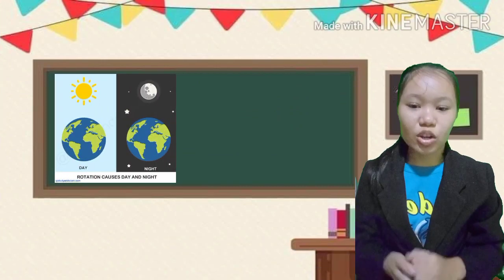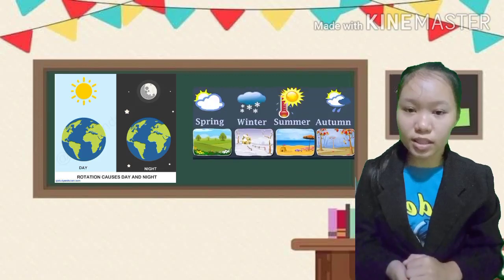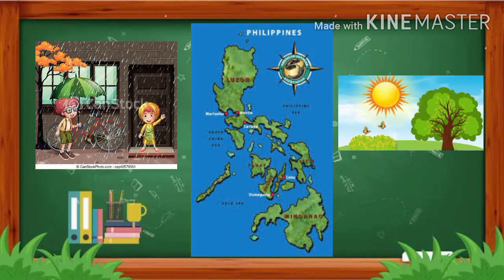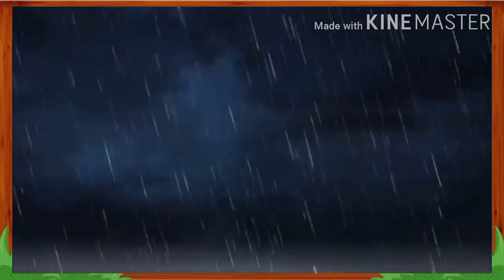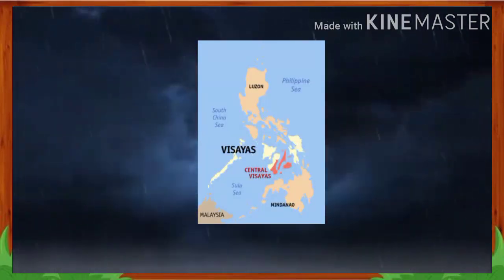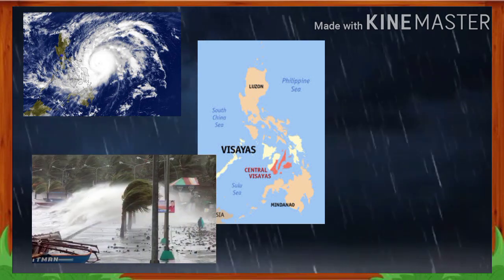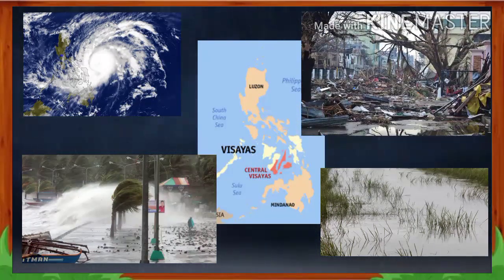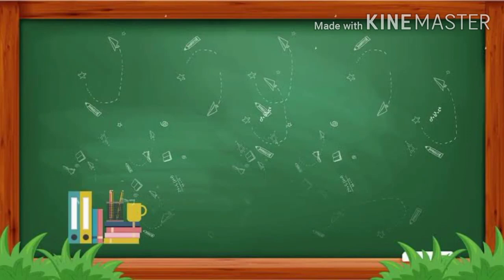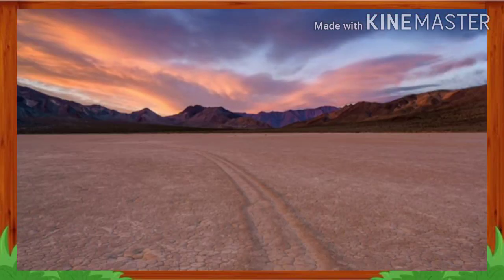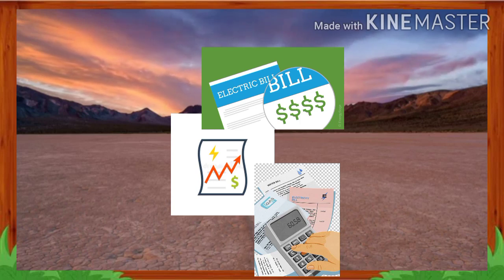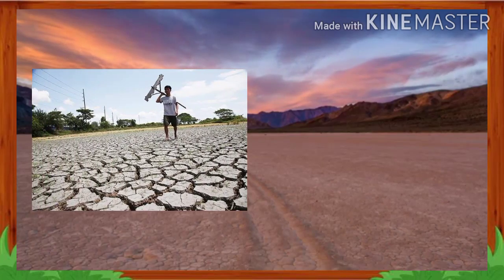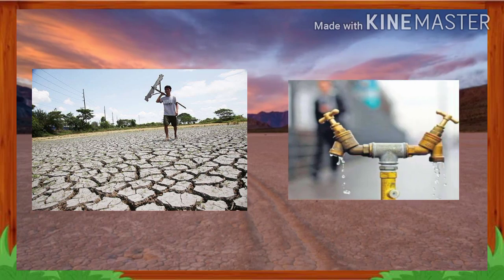We experience day and night through the rotation of the Earth, and we experience different seasons because of the Earth's revolution. In the Philippines, we experience wet and dry seasons. During the rainy season, many places especially in the Visayas region are affected by typhoons that cause rising sea levels, washing away rice plantations and homes. During the hot or dry season, electricity consumption is very high due to use of fans, air conditioners, and refrigerators, and rice plantations suffer because soil dries up and water supply is insufficient.